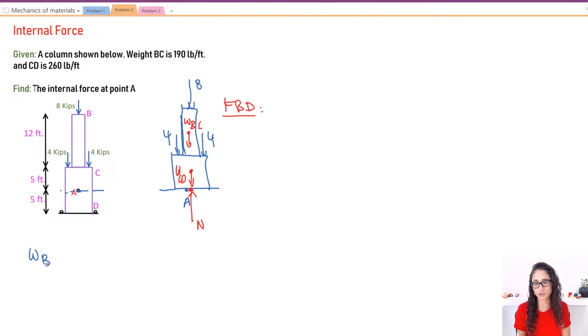So let's calculate the weight for BC first. So I have 190 pounds per foot and we're going to multiply it by 12 feet because that's my length here. So this is equal to 2280 pounds. And note guys here that the units cancel, so we're left with pounds. So let's convert this into kips because we have everything here in kips. So we want to make sure our units are consistent. And so this is going to be 2.28 kips. Okay, so that's for BC.